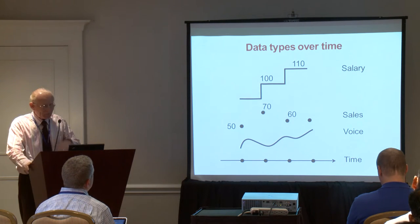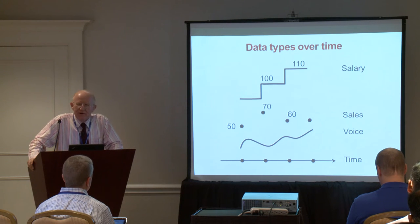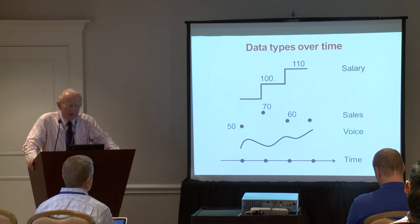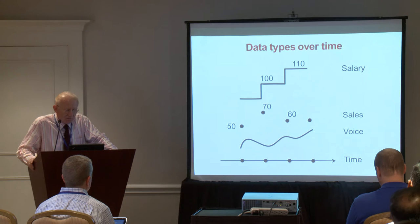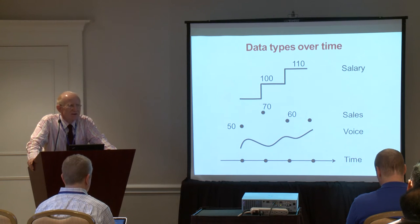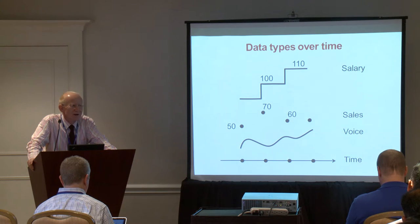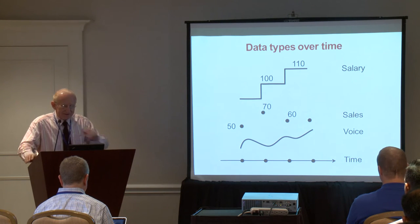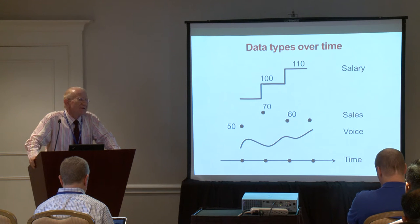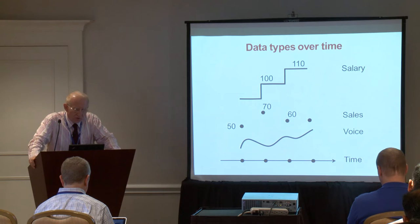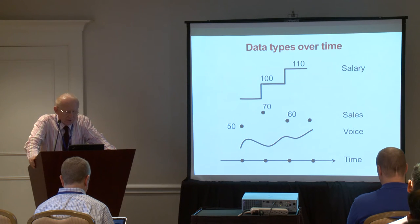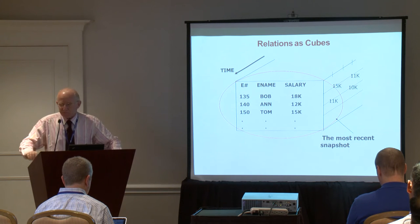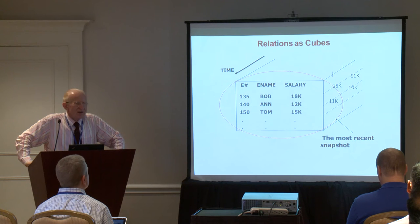What data types do we deal with in a temporal database? We can identify three types. The first is stepwise constant — for example, salary, which is valid for a certain period and changes abruptly. The second is data valid at a time instance, like a sales transaction. The third is analog continuous data, like a voice signal. A temporal database must deal with all of them.